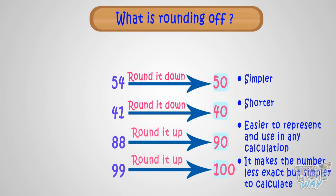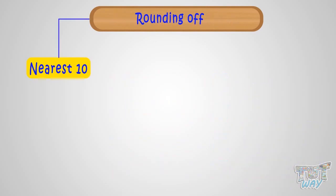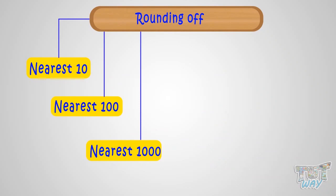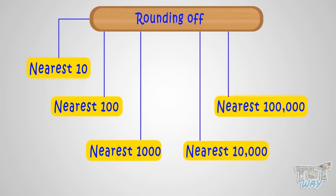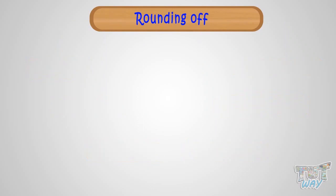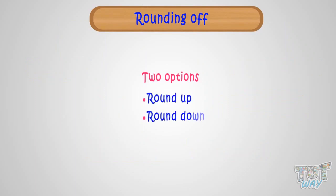Rounding off can be to the nearest ten, hundred, thousand, ten thousand, hundred thousand, or even million. Here we will be learning all of these today. In rounding off there are always two options — either you round up the number or round down the number.